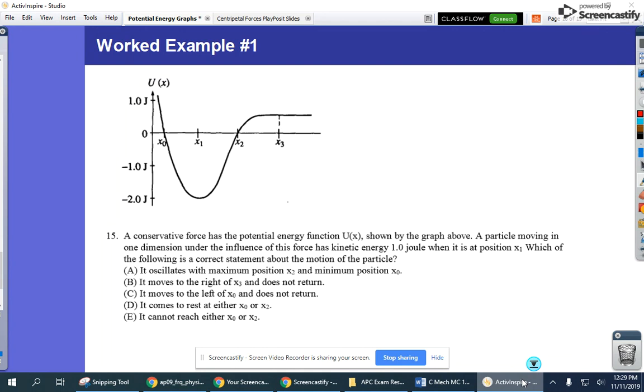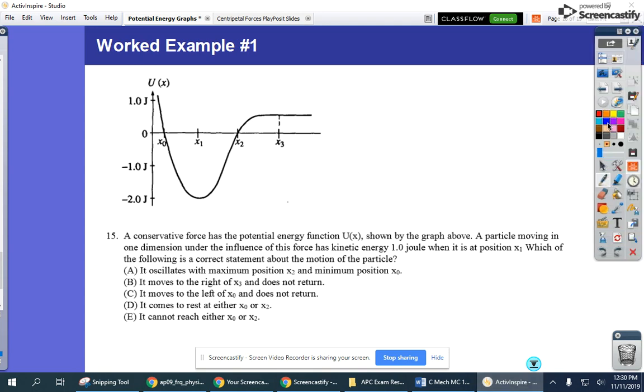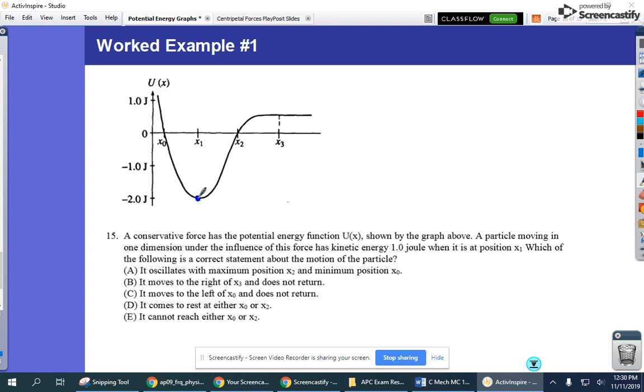So we have a conservative force with the potential energy shown above, and we'll talk about in class what a conservative force is. A particle moving in one dimension under the influence of this force has kinetic energy 1 joule when it's at position x1. So let's actually just stop for a moment. We're saying when we're at position x1, we have a kinetic energy of 1 joule.